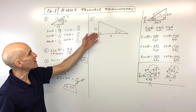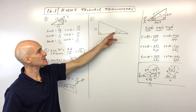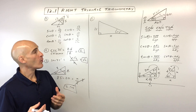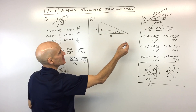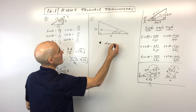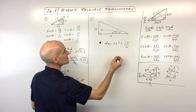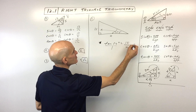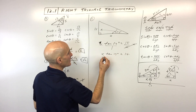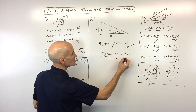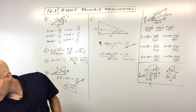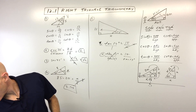For number 5, solving for the missing side X with a 17-degree angle and sides 15 and X. We have opposite and adjacent — that's tangent. So tangent of 17 degrees equals 15 over X. Multiply both sides by X, then divide both sides by tangent of 17. X equals 15 divided by tangent of 17, which comes out to about 49.1.